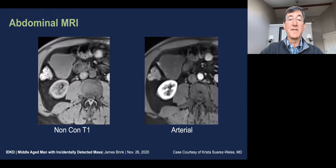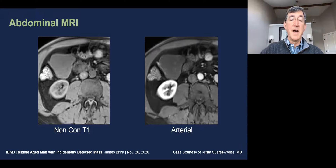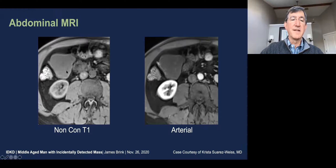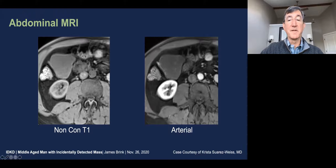Here we have transaxial images from the non-contrast enhanced T1 weighted sequence and a corresponding arterial phase sequence. On the non-contrast enhanced image, we see the mass has a rather unusual shape and is primarily homogeneous in signal intensity, although with some mild heterogeneity as well. It is slightly hypo-intense overall compared to musculature.